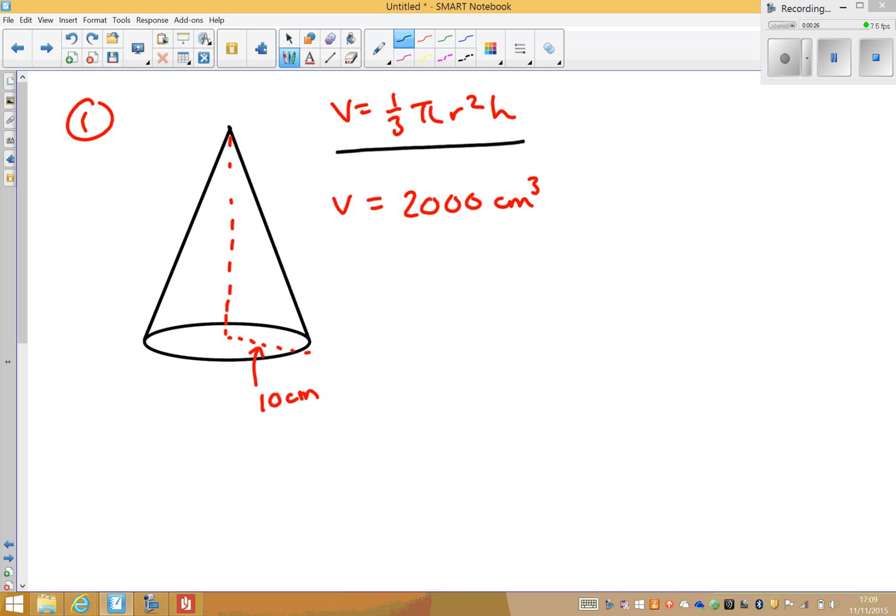So in my first example, you're given that the volume is 2,000 centimeters cubed. You're told that the radius is 10 centimeters and you need to find the perpendicular height of the cone.